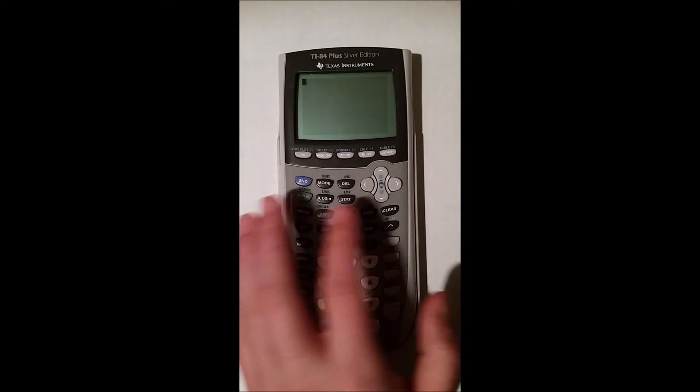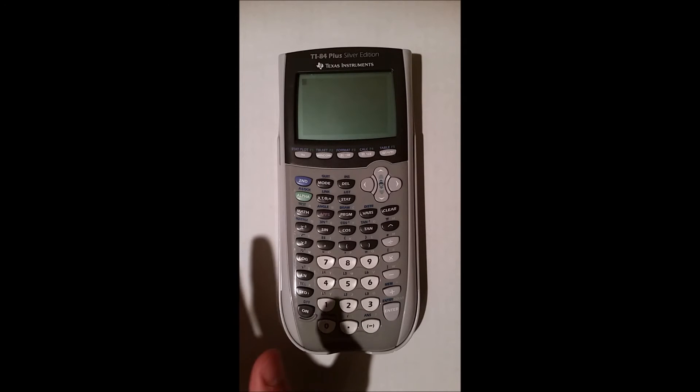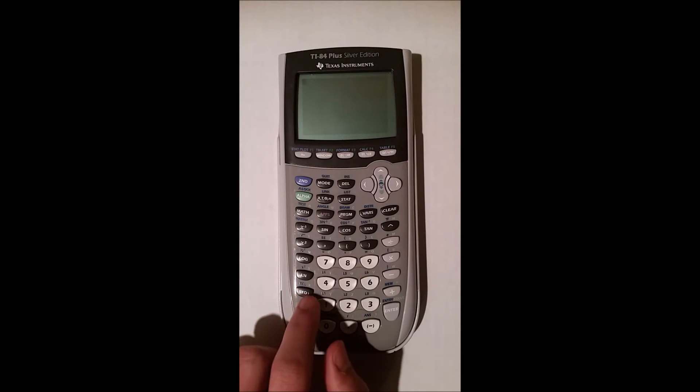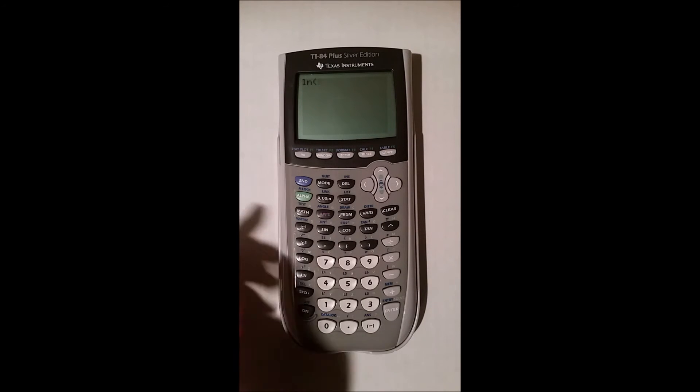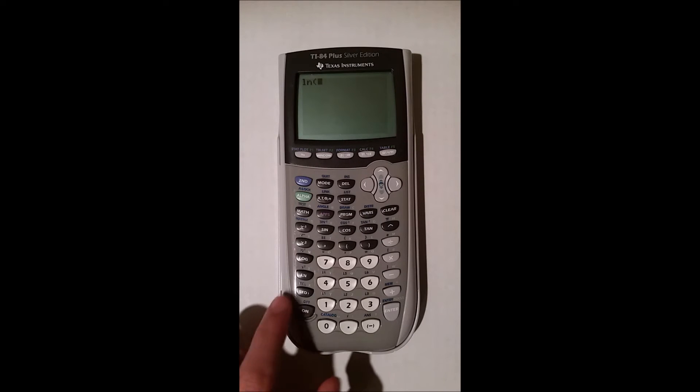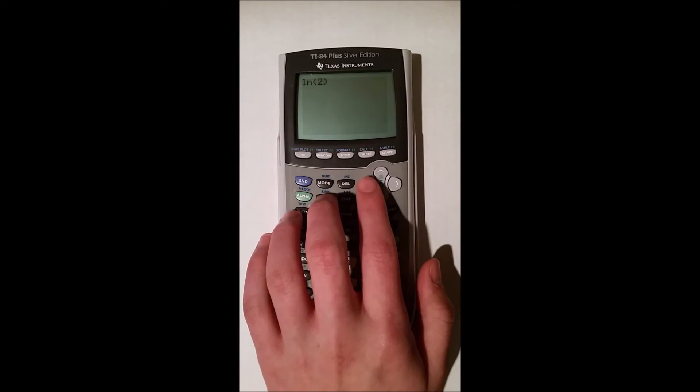And the next type of log is the natural log, which is a log with a base of E, the constant, which is right here, LN. And again, it doesn't actually say base E, but that is what the LN is, natural log. And again, you can put in the constant or a variable.